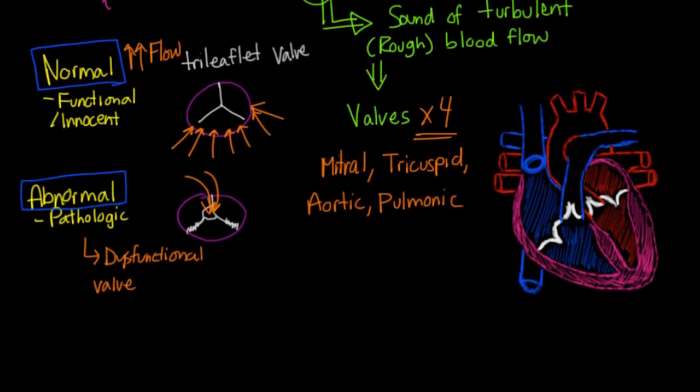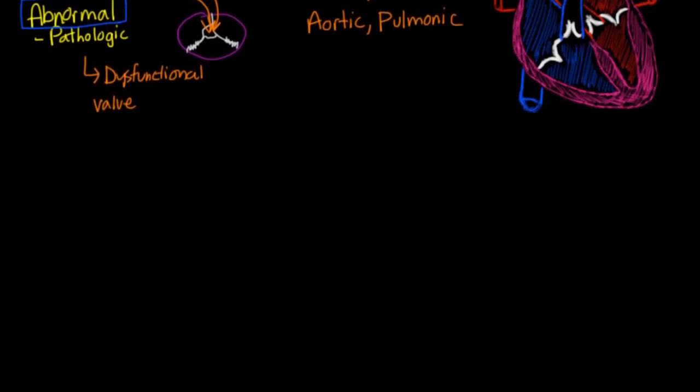And so in abnormal murmurs, the valve can be dysfunctional in one of two ways. And the first is that the valve can be stenotic, or you can have a situation of stenosis. And the other is called regurgitation. And you'll also see this as insufficient.